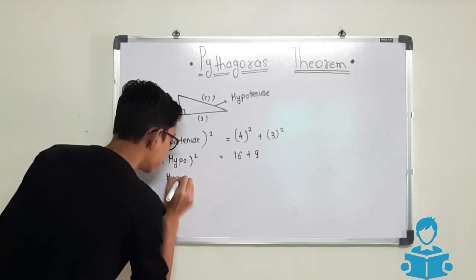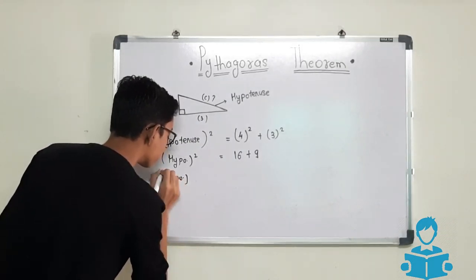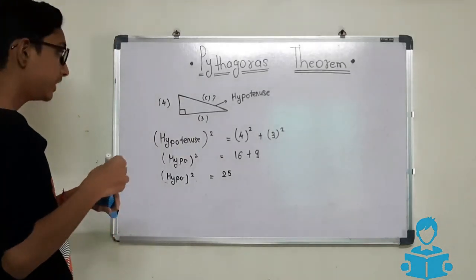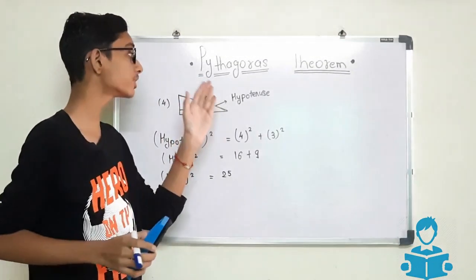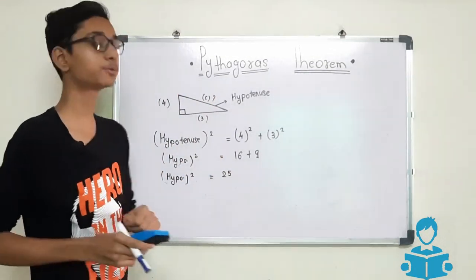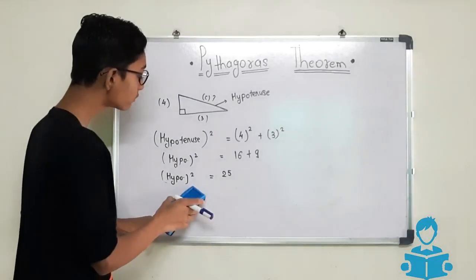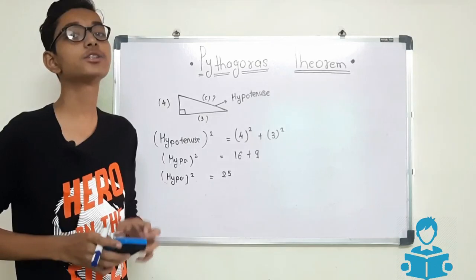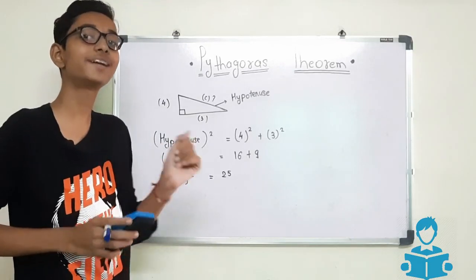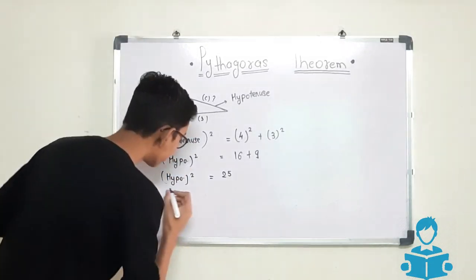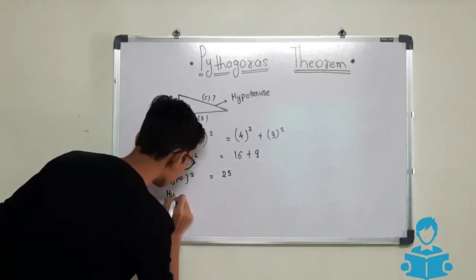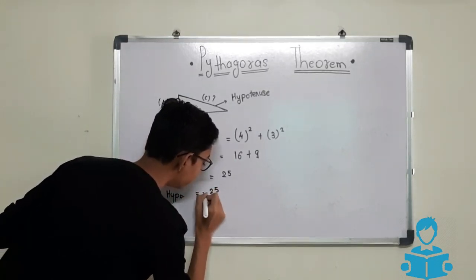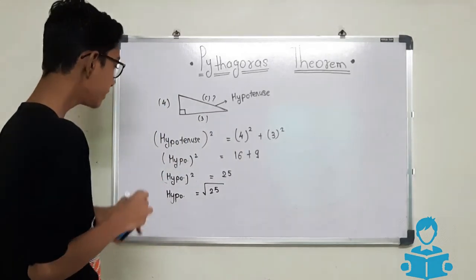Hypotenuse square is equals to 25. Here we have to find the hypotenuse, not the square of hypotenuse. We found the square of hypotenuse, but we have to find the hypotenuse. So we will do: hypotenuse is equals to square root of 25.